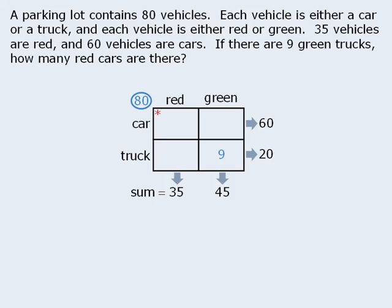For example, we already know that the sum of these two boxes must be 20. Since one box is 9, the other box must be 11. We also know that the sum of these two boxes must be 45, so the top box must be 36. Finally, we know that the sum of these two boxes must be 60, and since one box is 36, the other box must be 24.